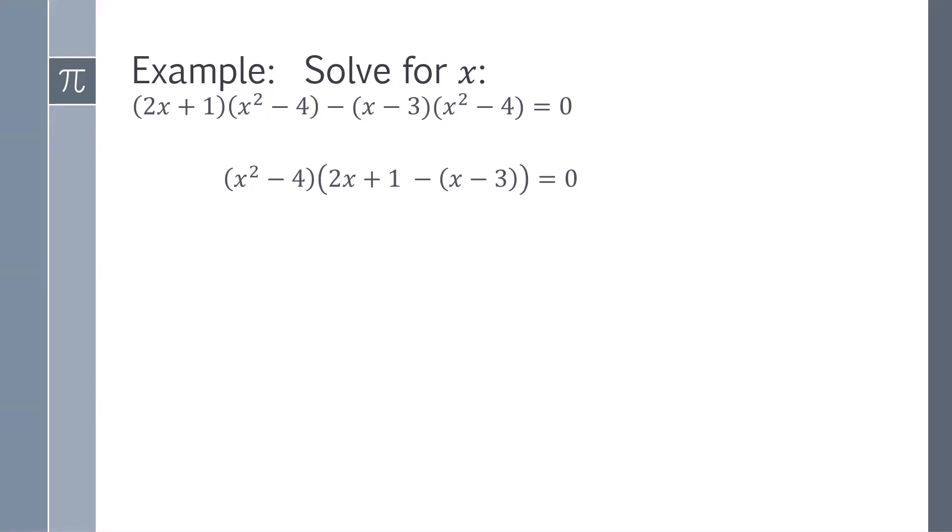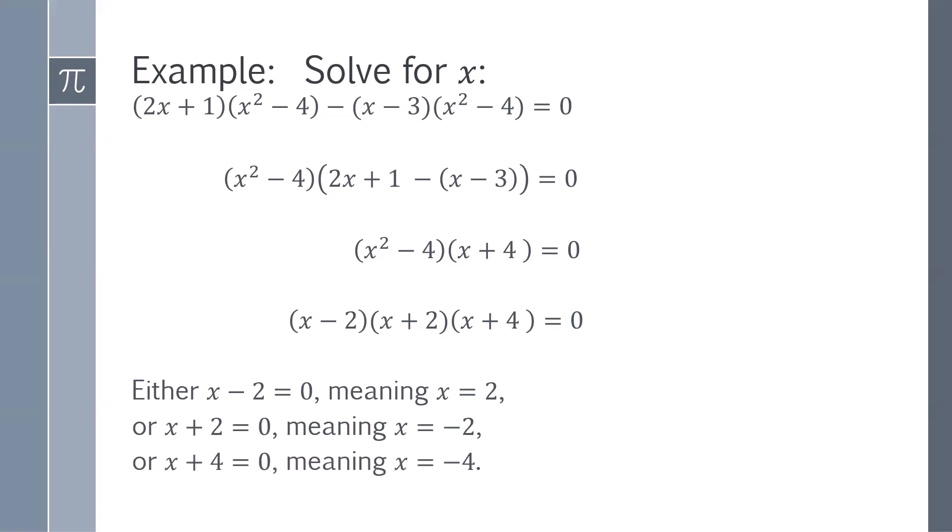We simplify, collect like terms, and we're left with (x² - 4)(x + 4) = 0. Factoring the x² - 4 we get (x - 2)(x + 2)(x + 4). And so x is either going to be +2, -2, or -4.